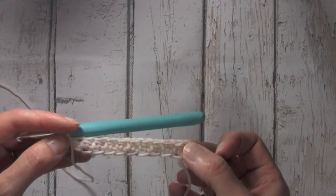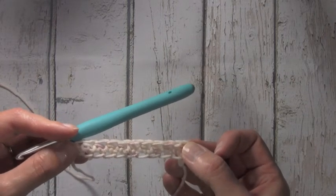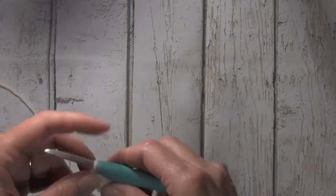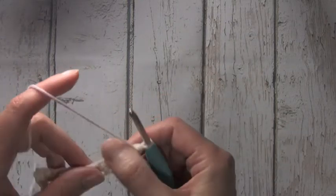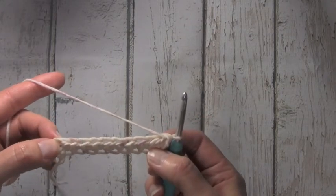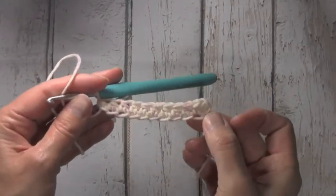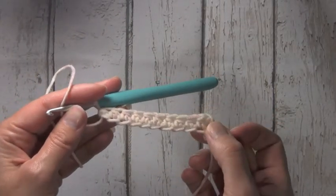Of course, if this were a project that you were just working in rows, you would turn your work at the beginning of your next row and you would work your rows just the same as you would with any half double crochet row. So there you have it, the foundation half double crochet.